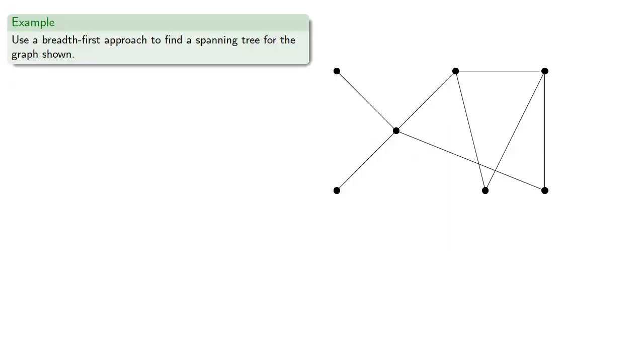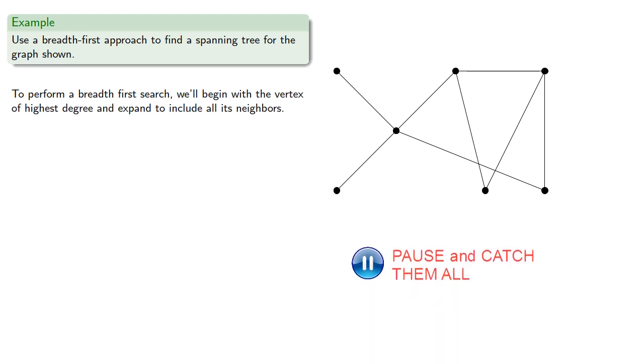So let's use a breadth first approach to find a spanning tree. To perform a breadth first search, we'll begin with the vertex of highest degree and expand to include all its neighbors. So we find the vertex of highest degree and expand. This gives us the first two edges in our spanning tree.